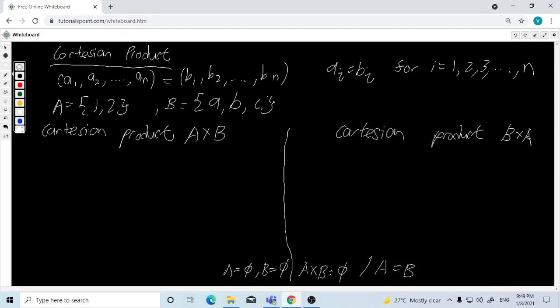So then right now we introduce the Cartesian product. What is the Cartesian product? a1 until a infinity, they have the corresponding same value to b1 until b infinity. So then we have a question like set A and set B, so that we need to calculate the Cartesian product B×A.